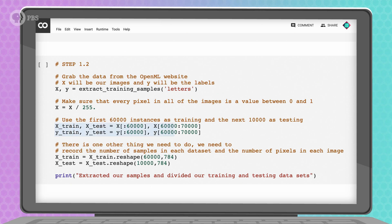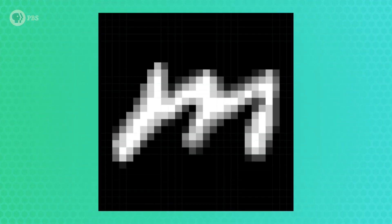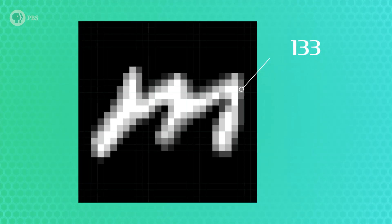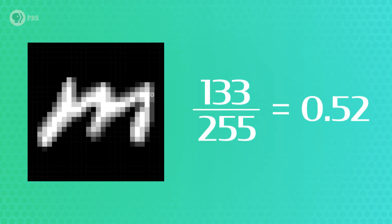These images of letters are 28 by 28 pixels, and each pixel is a grayscale value between 0 and 255. To normalize each pixel value and make them easier for the neural network to process, we'll divide each value by 255. That will give us a number between 0 and 1 for each pixel in each image.